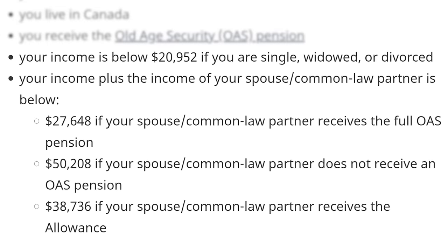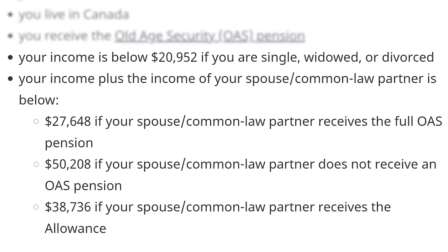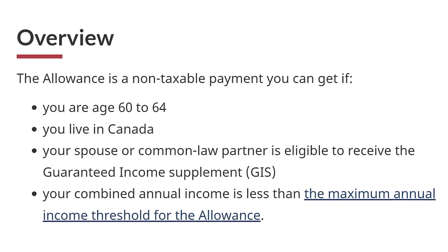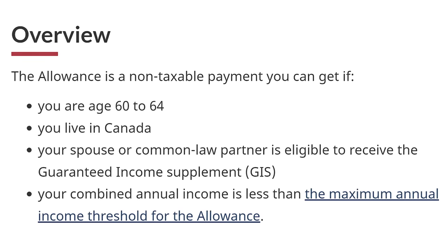If you qualify for GIS and have a spousal or common-law partner between ages 60 and 64 who isn't collecting OAS, there's an allowance benefit as well. So talk about layers of government benefit: there's CPP, OAS, GIS, allowances, survivor benefit, and death benefits. There are a lot of moving parts when it comes to government benefits.